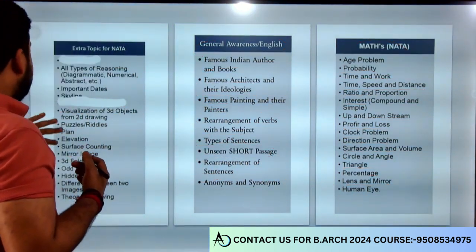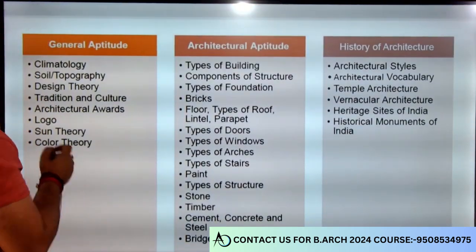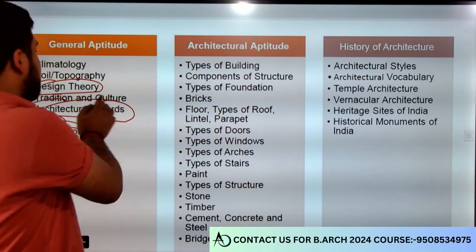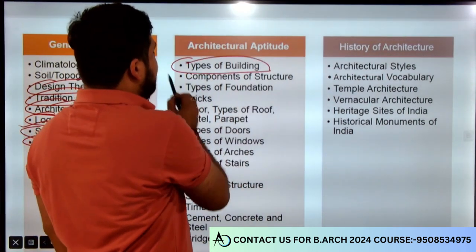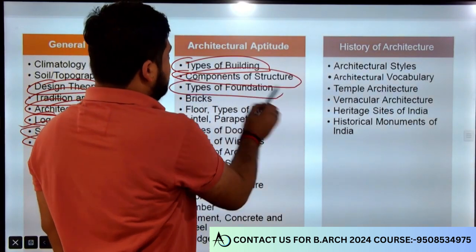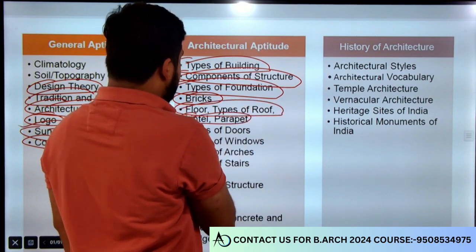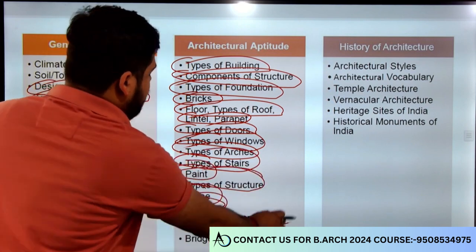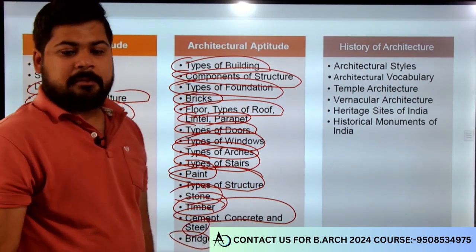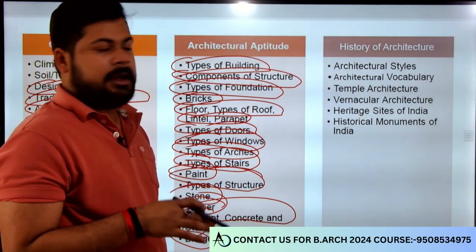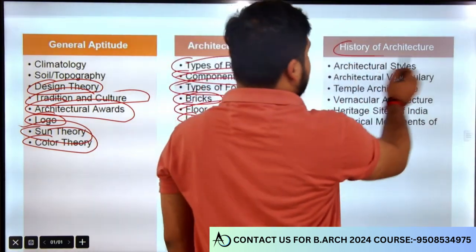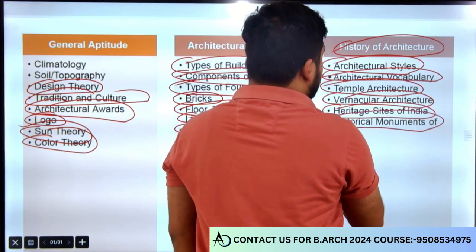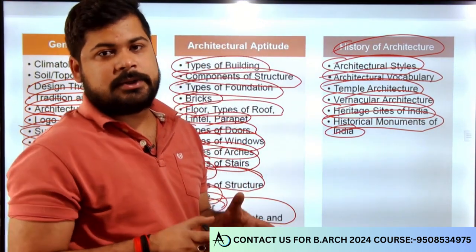General aptitude में architecture awards, logos, sun theory, color theory, design theory इन सब से questions हैं, फिर tradition and culture, building materials और techniques के बारे में - types of buildings, composition of structure, types of foundation, brick floor types, lintels, parapets, doors, windows, arches, stairs, paint, types of stones, timber, cement, concrete, steel और bridges - ये सारे basic construction techniques और materials पर हैं। Final topic है history of architecture जिसमें architecture style, architecture vocabulary, temple architecture, vernacular architecture, heritage sites और historical monuments of India से questions आने वाले हैं।